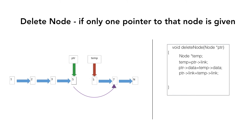In the final step, we simply delete the node pointed by temp by freeing the memory allocated to it. Using this indirect method, we have successfully deleted the node containing value 4 while maintaining all the links in our linked list. One important thing to note is that we cannot delete the last node using this method, as it will not have any nodes after it.